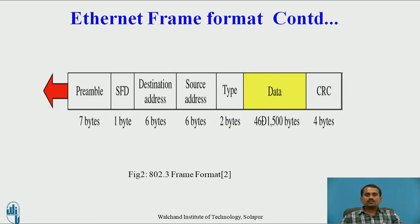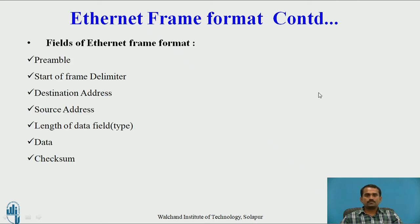This is the frame format. There are several fields: Preamble, SFD, destination address, source address, type, data, and CRC. The preamble field is 7 bytes. SFD — Start of Frame Delimiter — is 1 byte. Destination address is 6 bytes. Source address is 6 bytes. Type is 2 bytes. Data is where the user's actual data is kept, with a size of 46 to 1500 bytes. CRC — Cyclic Redundancy Check — is 4 bytes, used for finding errors while transmitting the frame from one station to another.